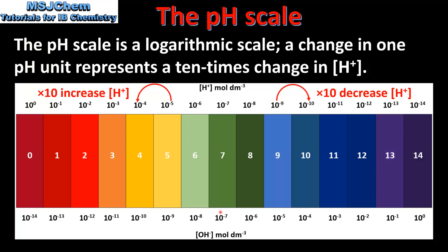To summarize: the lower the pH value, the higher the concentration of hydrogen ions. And the higher the pH value, the lower the concentration of hydrogen ions. It's also important to remember that a change in one unit is a 10 times change in hydrogen ion concentration, because the pH scale is a logarithmic scale.